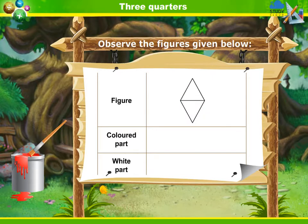The fourth figure is of a diamond whose half part is coloured and half part is white.